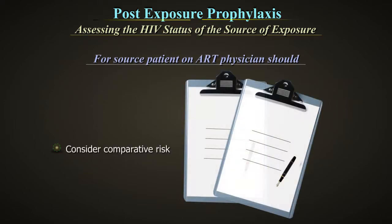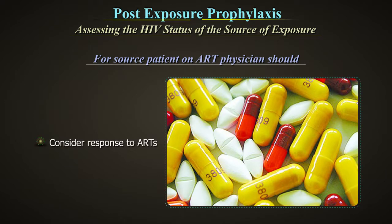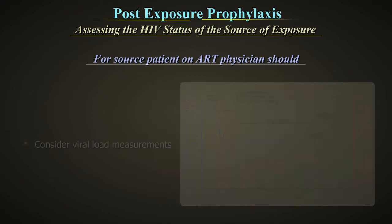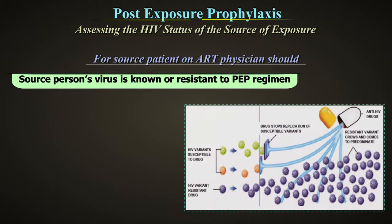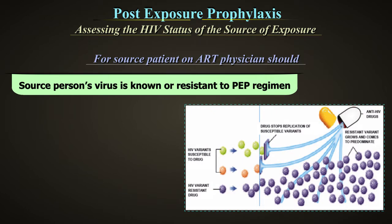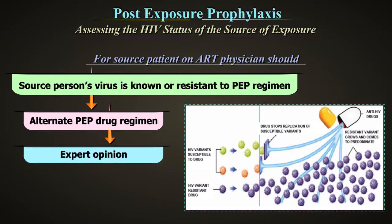The physician should consider the comparative risk represented by the exposure, taking into account the source's history of and response to ARTs based on clinical response, CD4 cell count, viral load measurements if available, and current disease stage. If the source person's virus is known or suspected to be resistant to one or more drugs considered for the PEP regimen, the exposed person should be given an alternate PEP drug regimen and referred for expert opinion.